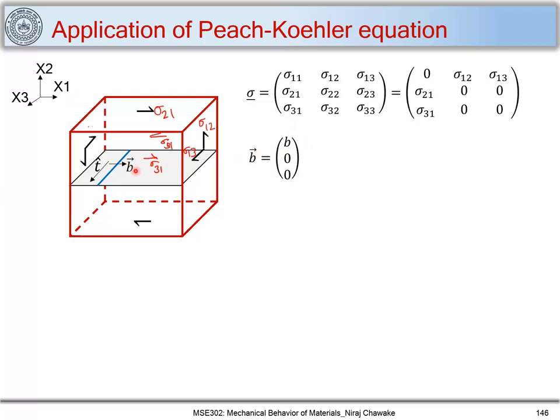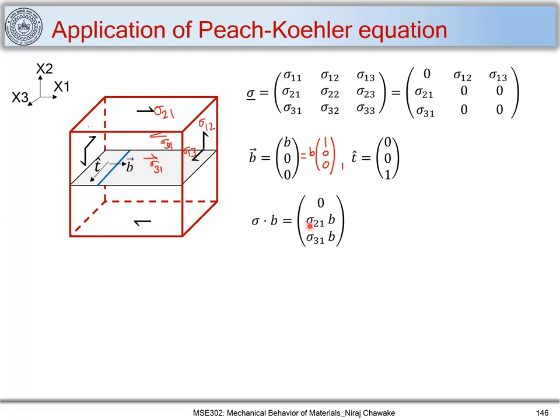Now let's find sigma · b. When we compute sigma · b, we get: (0, sigma₂₁·b, sigma₃₁·b). This is from the Peach-Koehler equation. Taking the cross product of (sigma · b) with the tangent vector t, and evaluating the determinant, we get the force per unit length acting on the dislocation line: F_L = sigma₂₁ · b · î. There is a correction: one term equals zero.